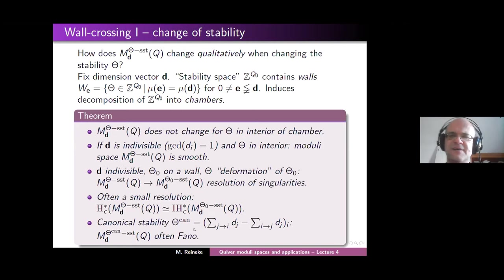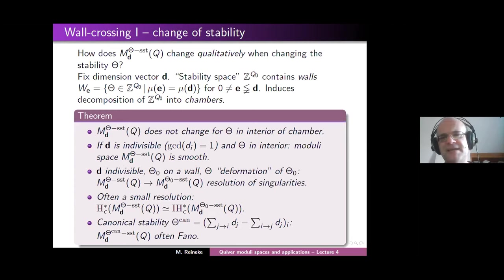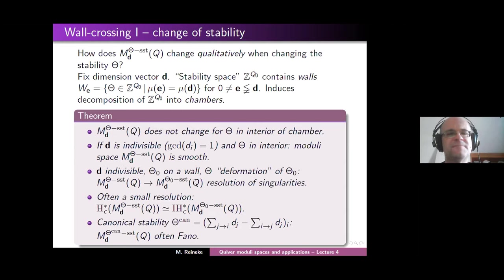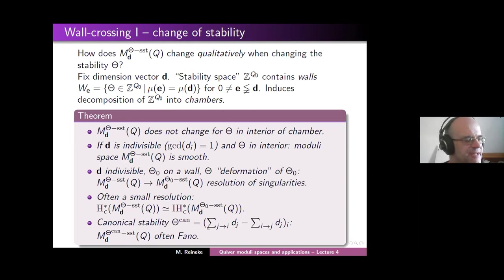Fano varieties are among the most special smooth projective varieties. They behave much more rigidly than arbitrary smooth projective varieties. There is a certain canonical stability for which you have a Fano variety, and then you can move your theta in stability space and get more complicated varieties if you want.